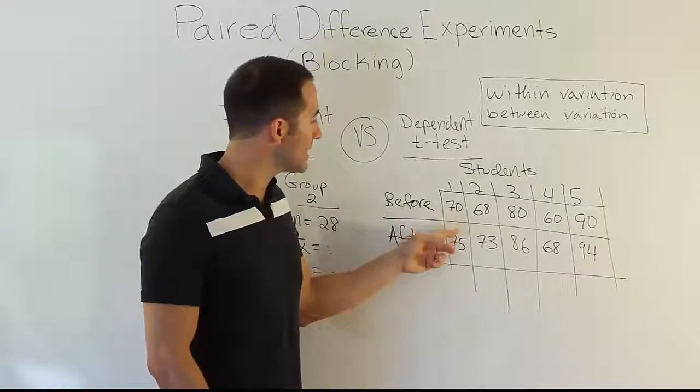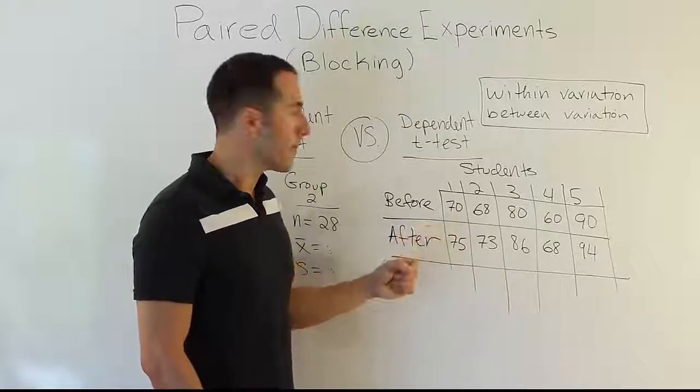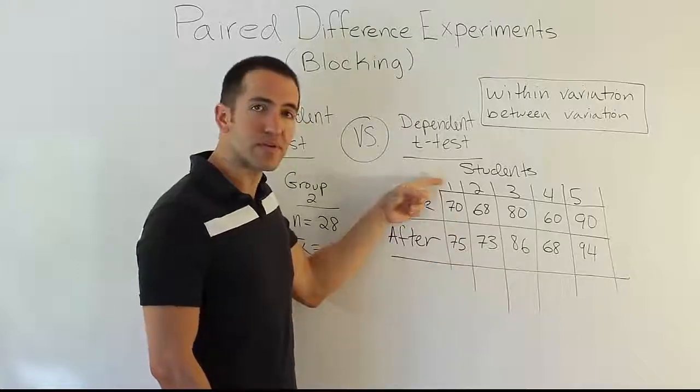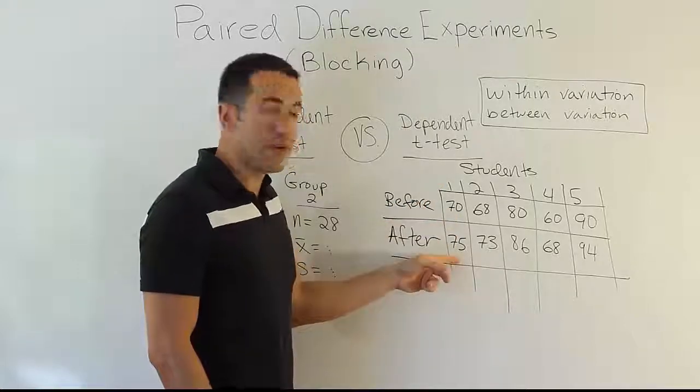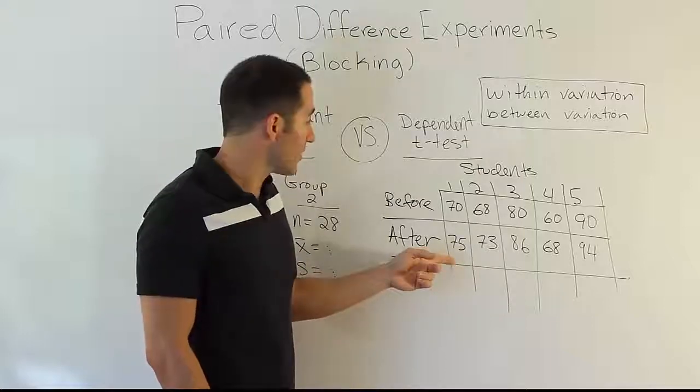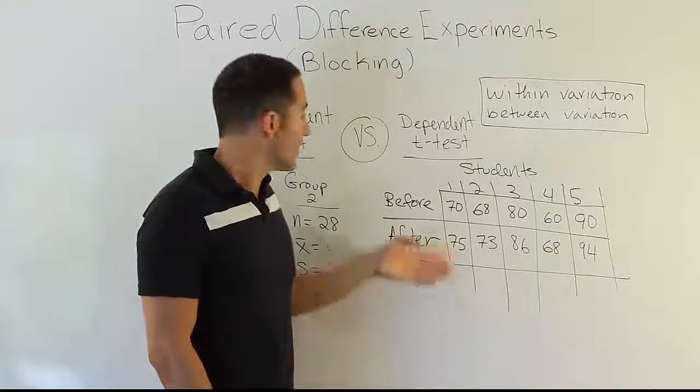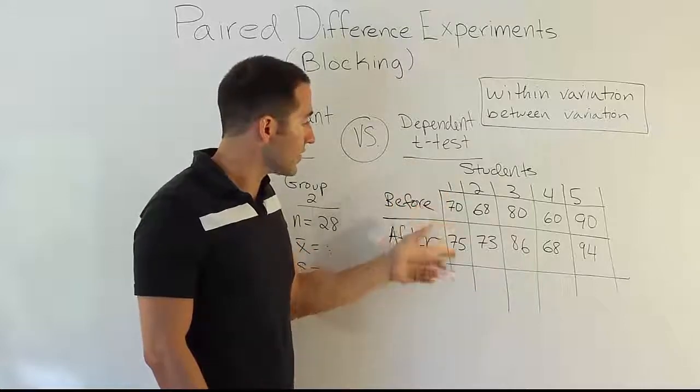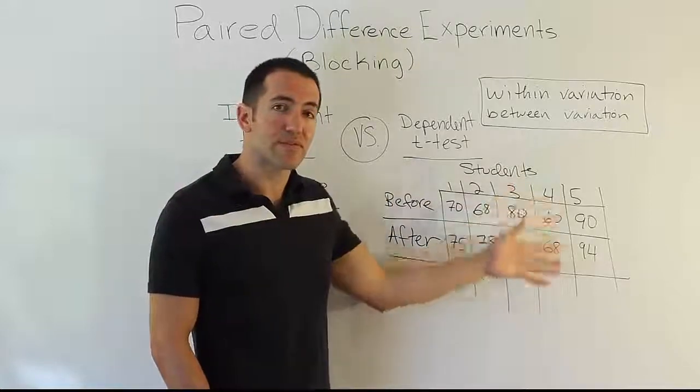That's one key thing. The other thing is, you see there's a dependency between these numbers. In other words, they come from the same students. You're not going to see 70 and 100 typically, mainly because it's the same student taking the exam. So if it goes from 70 to 100, then you would have to see those kind of differences throughout.